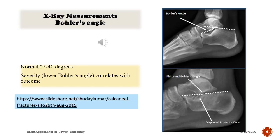X-ray measurements: Bohler's angle is normally 25 to 40 degrees. A lower Bohler's angle correlates with severity and outcome. Notice the radiographs depicting the Bohler's angle, and in a fractured case, a flattened angle can be seen in the lower radiograph.